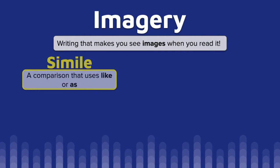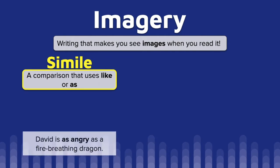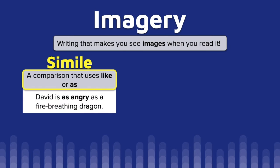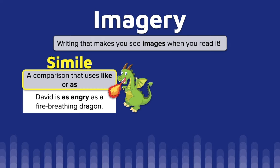Our first example: David is as angry as a fire-breathing dragon. So we've used 'as' to compare David to a terrifying fire-breathing dragon — probably scarier than this adorable one, although who knows.